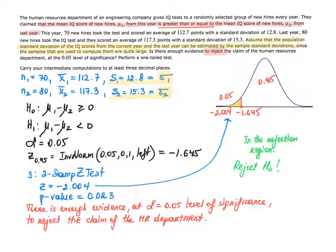For that reason, the claim of the human resources department goes into H₀. The null hypothesis states that μ₁ minus μ₂ is greater than or equal to 0 — with this year being the higher quantity. Alternatively, the alternative hypothesis H₁ states that μ₁ minus μ₂ is less than 0.